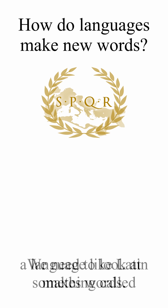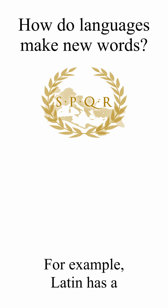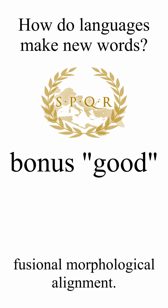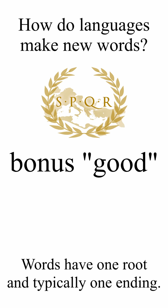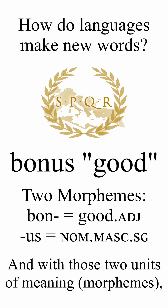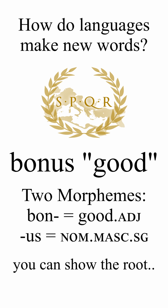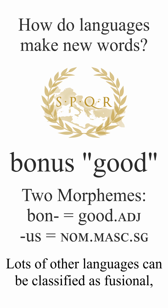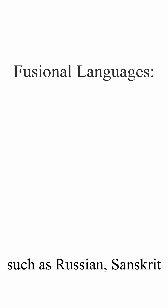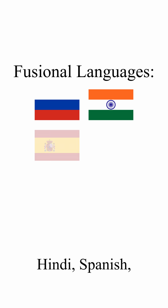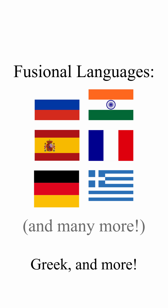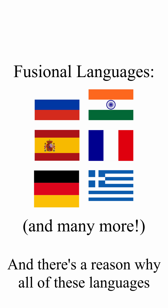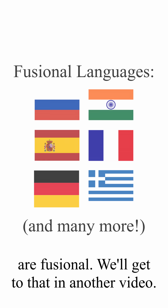Well first, let's get to know how a language like Latin makes words. We need to look at something called morphological alignment. Latin has a fusional morphological alignment. Words have one root and typically one ending. And with those two units of meaning, also known as morphemes, you can show the root and multiple grammatical features. Lots of other languages can be classified as fusional, such as Russian, Sanskrit, Hindi, Spanish, French, German, Greek, and more. And there's a reason why all of these languages are fusional — we'll get to that in another video.